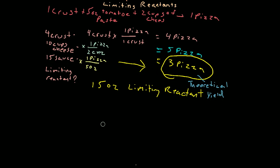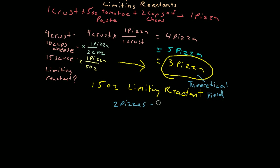But let's say things didn't go perfectly, and I only produced two pizzas. Maybe I wasn't able to use all 15 ounces of sauce — things aren't always perfect when working in a lab or a kitchen. Maybe some got stuck in the container. I was only able to produce two pizzas. That result is called the actual yield.